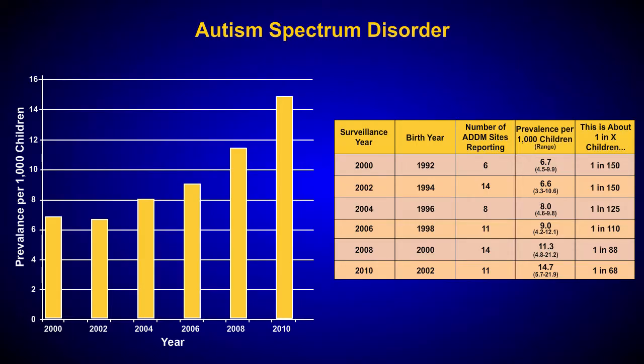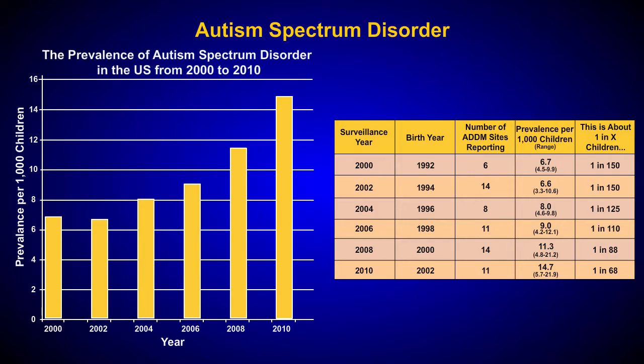Finally, our graph needs a title. Since it's displaying the prevalence of ASD, we could call it the Prevalence of Autism Spectrum Disorder in the U.S. from 2000 to 2010.